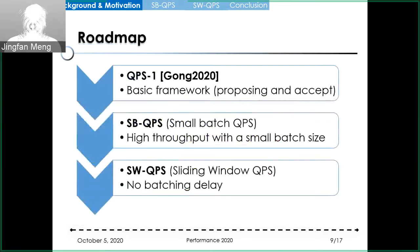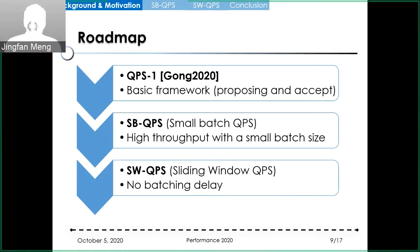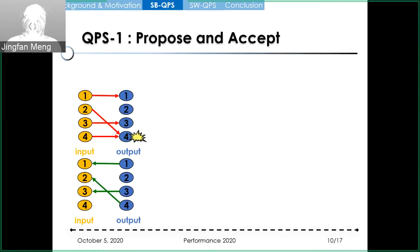Here is our roadmap of this research. First, we present small-batch QPS. It converts QPS1 to a batched scheduler. The main contribution of small-batch QPS is that it achieves high throughput with a batch size that is much smaller than previous batch schedulers. Next, we present sliding-window QPS, the final result of our research. It inherits all the benefits of small-batch QPS, but pays no batching delay. We start with QPS1 because both of our schemes are based on it.